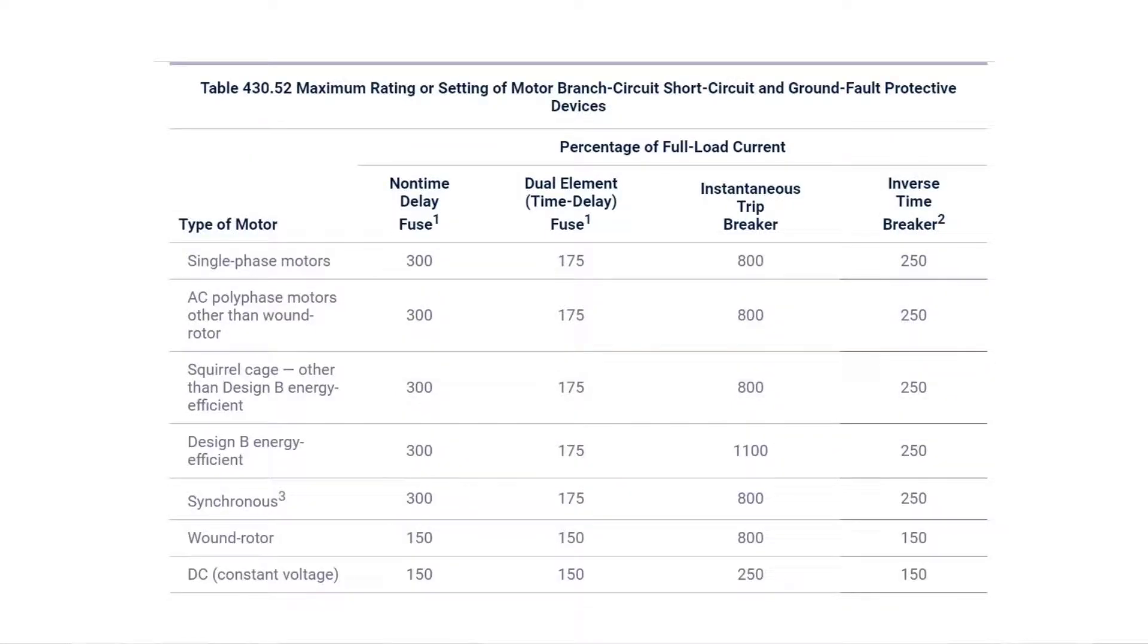Now we're going to make this table easier to understand. We've got four different columns, five basically. The first column is the type of motor. We have single phase and AC polyphase motors other than wound rotor. Those first two rows, rows go left to right, underneath that AC polyphase selection and above the squirrel cage, I want you to take your dark color highlighter and make that line straight across.